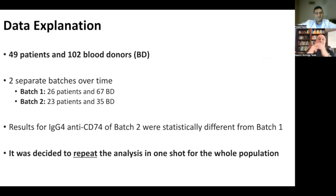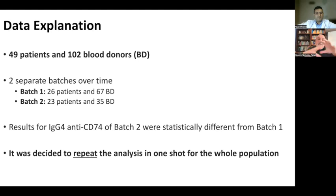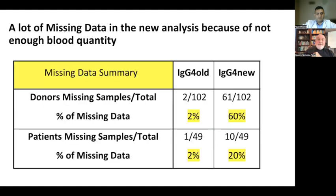They have almost 50 patients and about 100 controls that they call blood donors. The process was done in two batches where they sent batches to the population, and when they got the results from the batches and did the testing, they figured out that the results were statistically different in both batches and they had to repeat the analysis on the whole population. They repeated the analysis but unfortunately ran into a slight mishap — they did not have enough blood, though it was not unevenly distributed. So what did they do for that missing data?